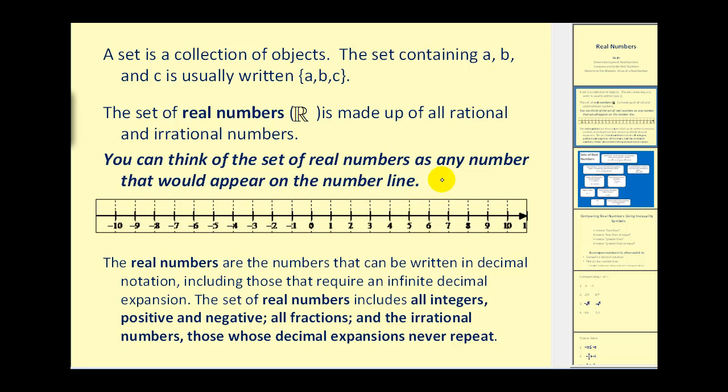The set of real numbers is made up of all rational and irrational numbers, which we'll define shortly. You can think of the set of real numbers as any number that would appear on the number line.